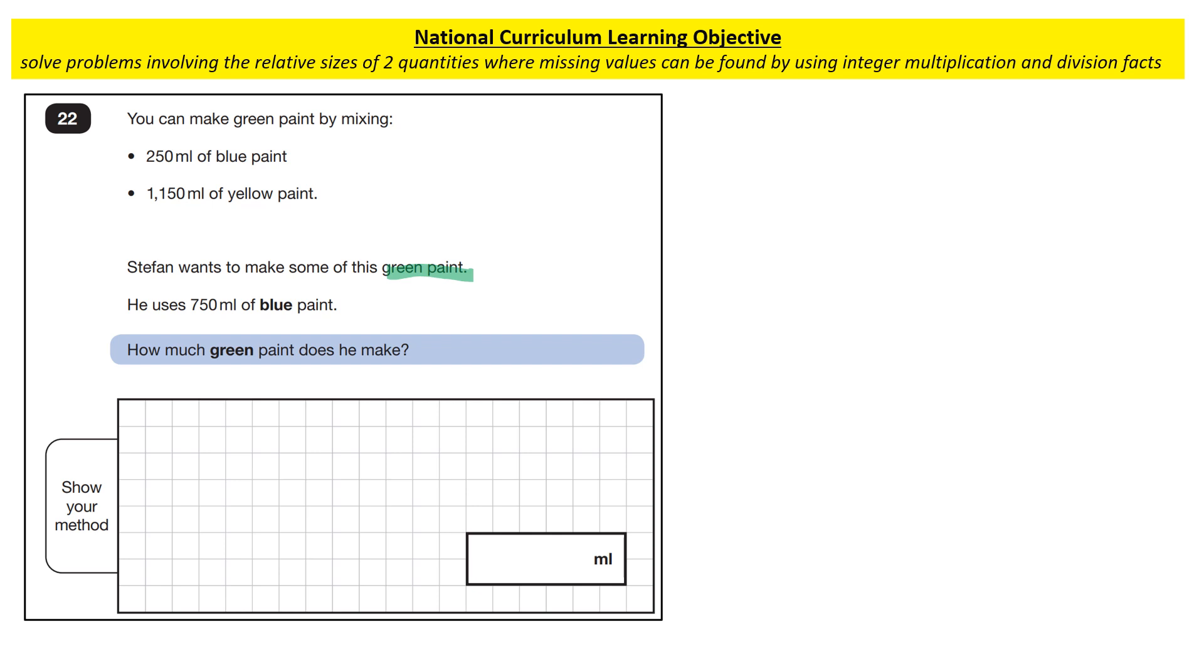Stefan wants to make some of this green paint. He uses 750 milliliters of blue paint. How much green paint does he make? Now with ratio, there's different parts of the ratio. I'm going to write it out and I'll explain what that means. It's very important that we read the question carefully so that we use the right clues and that we take the right part of the ratio for our answer. So let's just have a quick look at the information. We've got 250 milliliters of blue paint, 1,150 milliliters of yellow paint, and that makes green paint, a specific shade of green paint.